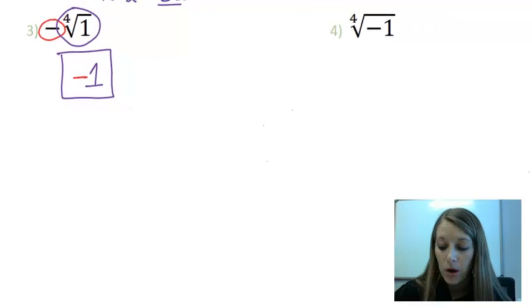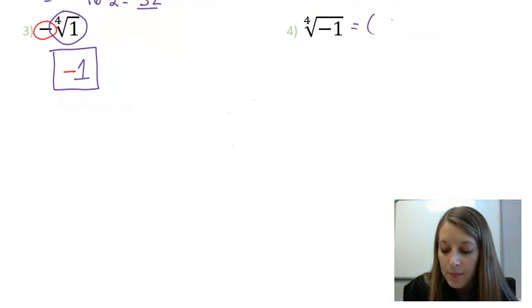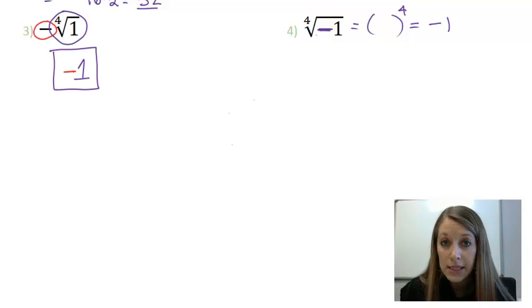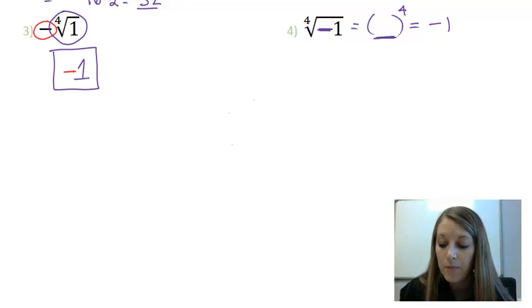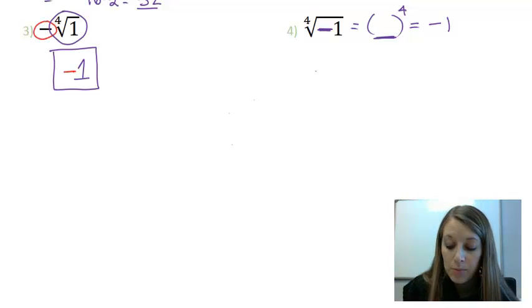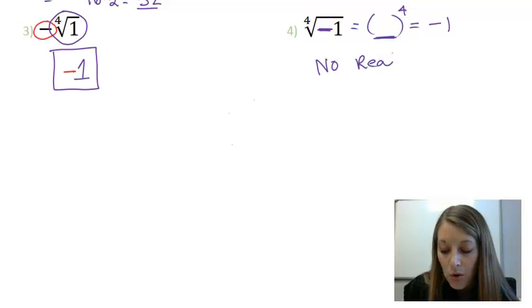In example four, I'm looking for something times itself four times to give me a negative one, because here, my negative is on the inside. So, that does go in your power step. And the answer to this is kind of a trick question, because there is absolutely no real answer to this problem.